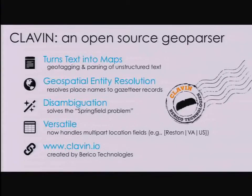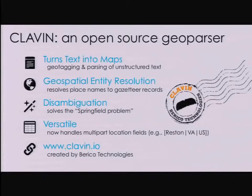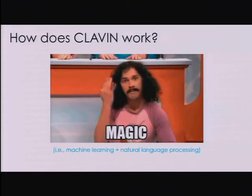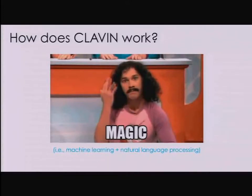The real magic of CLAVIN is that it does disambiguation of ambiguous place names — we call this the Springfield problem. If I tell you I'm from Springfield, you'll think: which Springfield? CLAVIN solves that Springfield problem by using the context of the document to figure out which Springfield the author is talking about. It's an open-source project, and the Lumify team recently added a new feature to handle semi-structured data with multi-part location names from databases or spreadsheets — that will be contributed back to CLAVIN soon. For more information, go to clavin.io. CLAVIN uses a combination of machine learning, natural language processing, and heuristic AI algorithms.